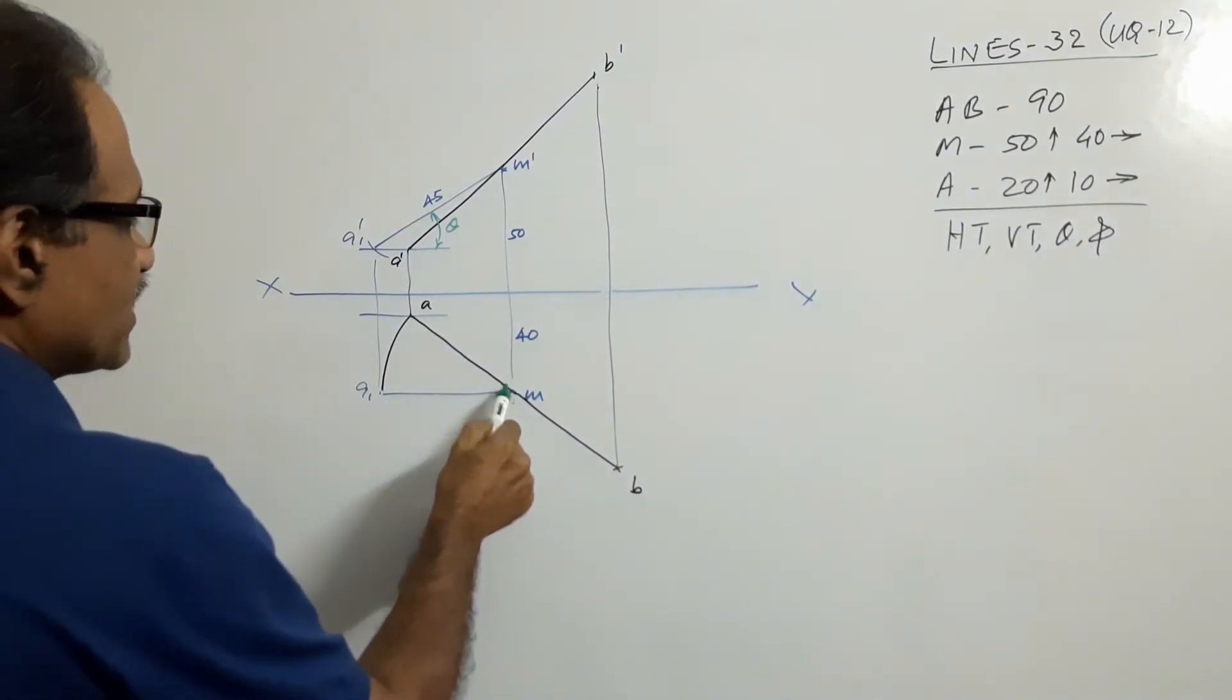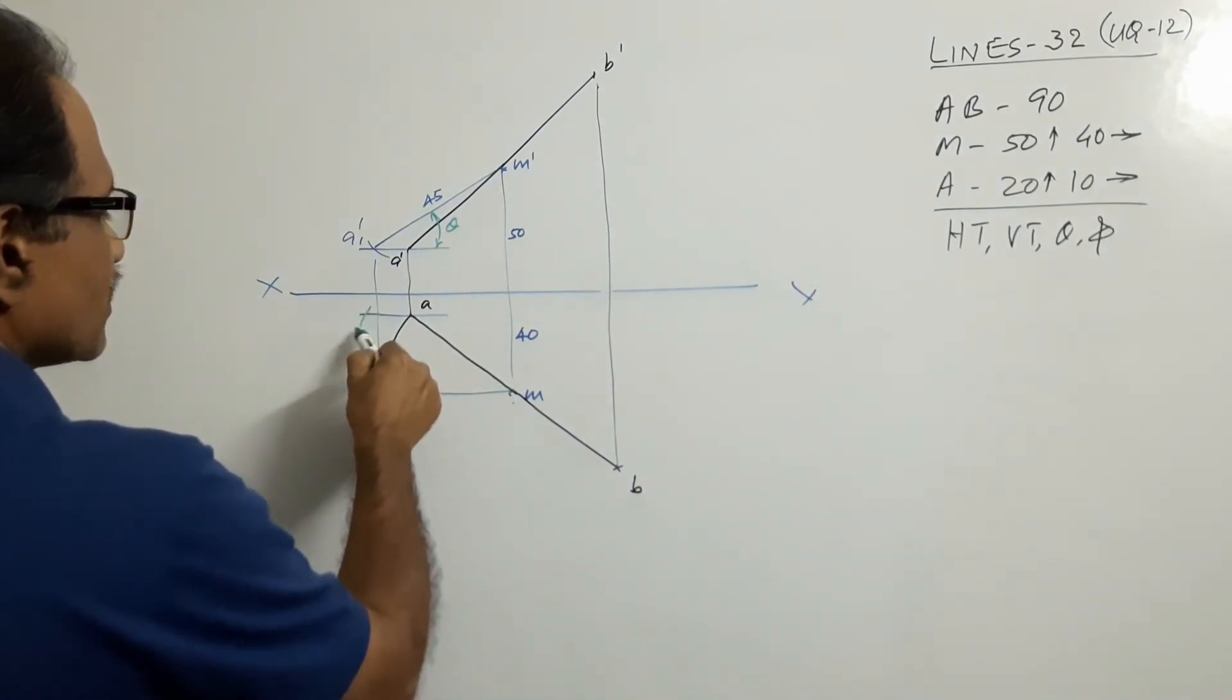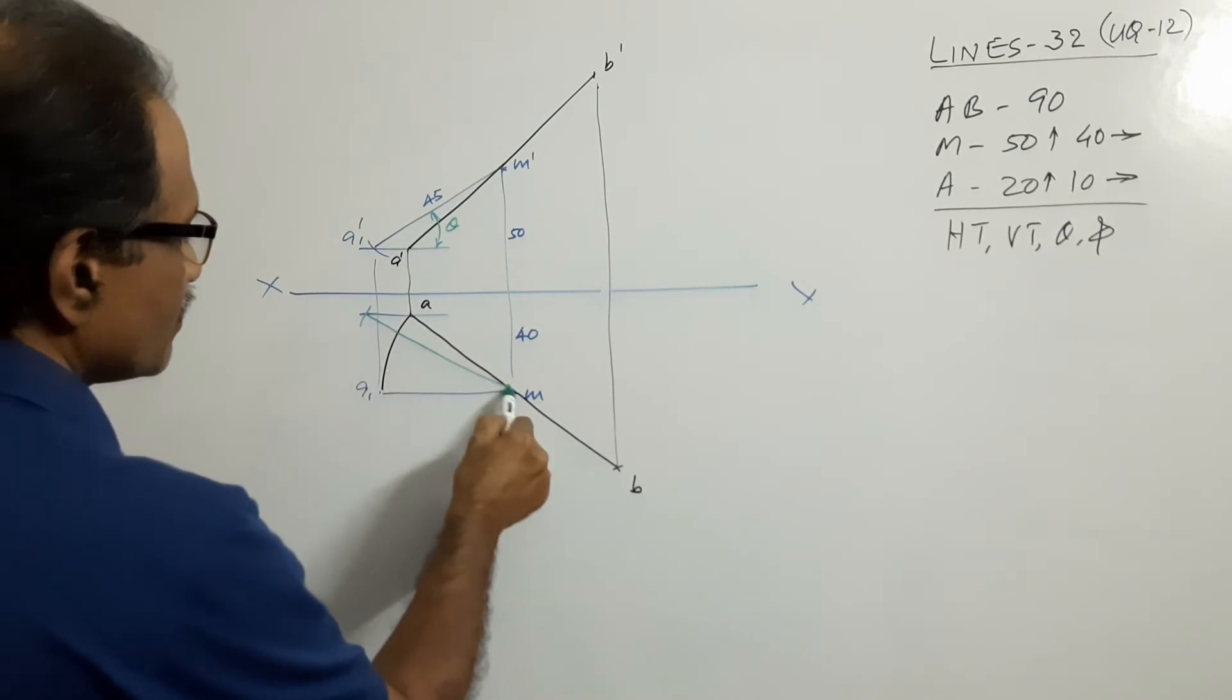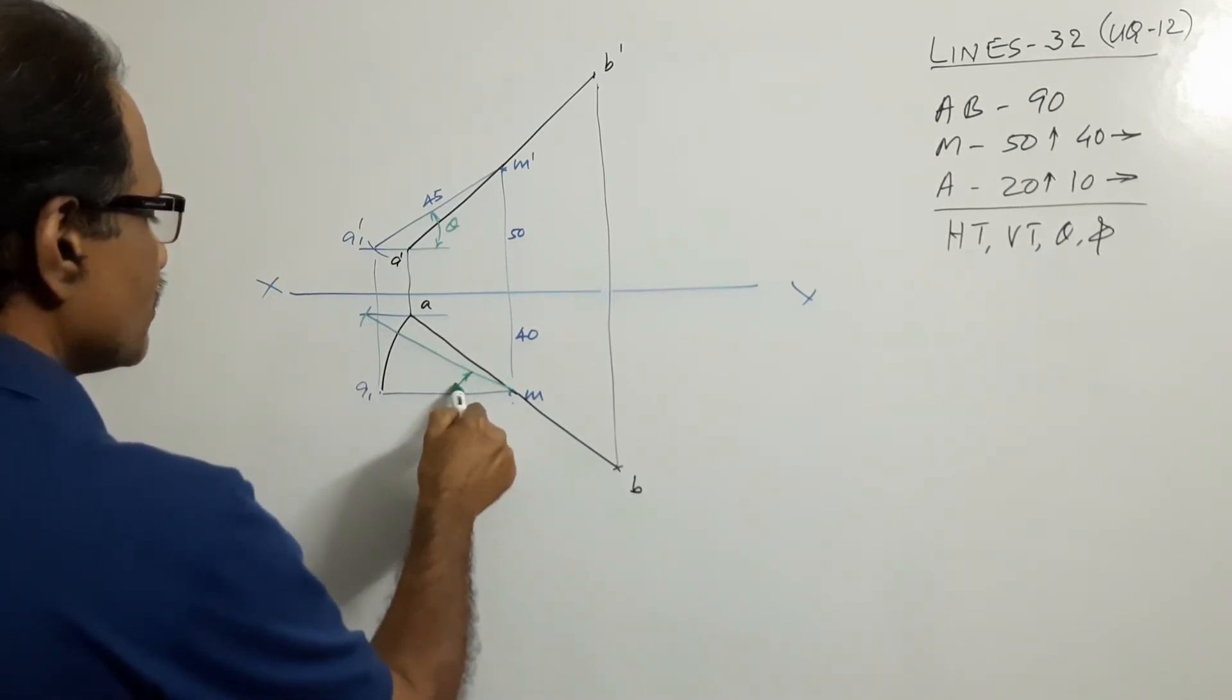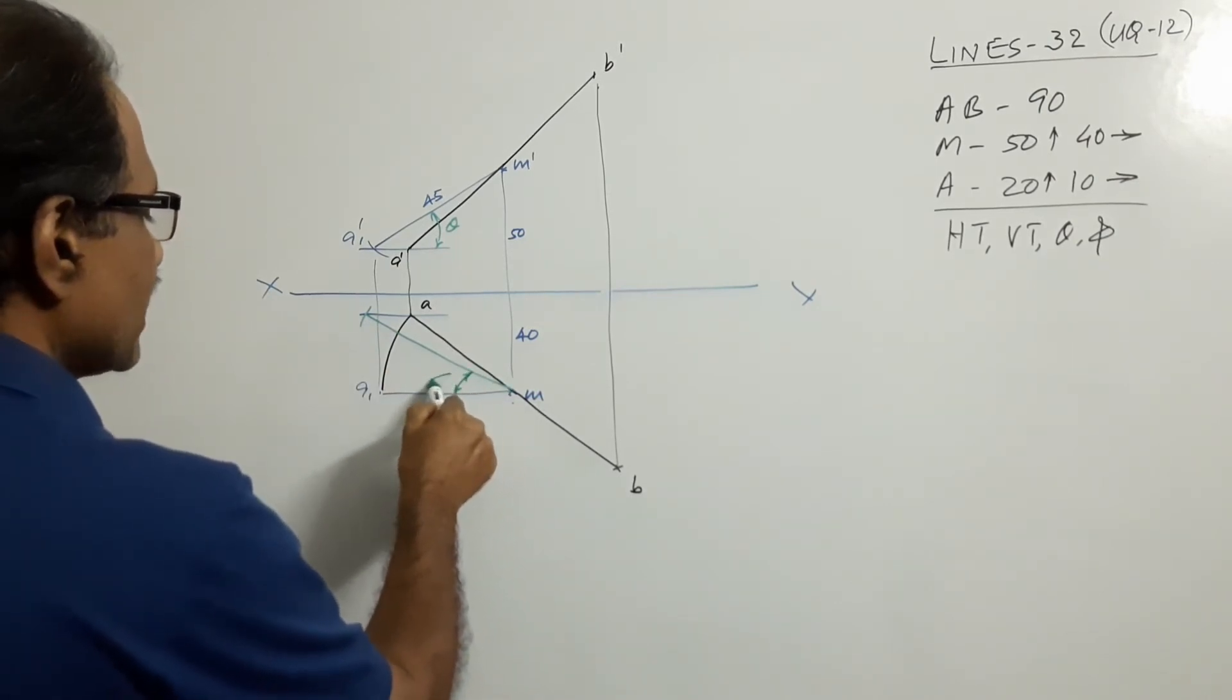To get phi, M as center, 45 as radius, cut an arc. This angle is phi.